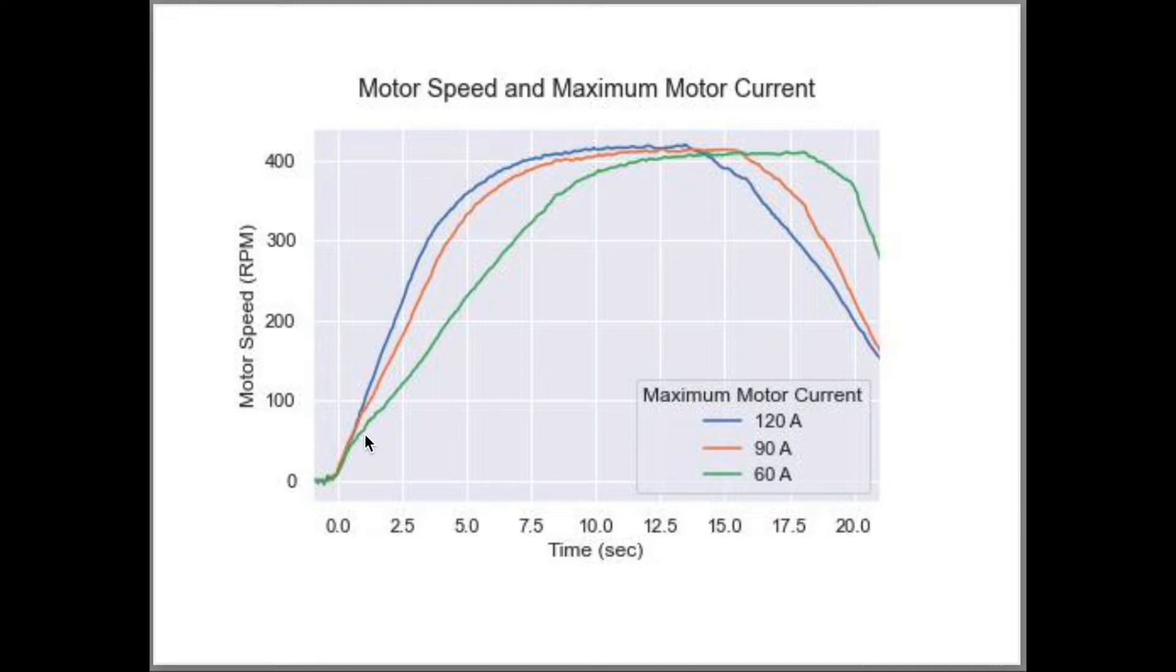When we varied the motor current, the initial acceleration changed, since the motor current, torque, thrust, and initial acceleration are all proportional.